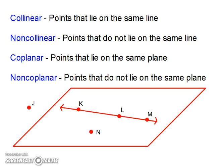Coplanar are points that lie on the same plane. So K, N, L are collinear. However, non-coplanar means that they do not lie on the same plane, so that would be like J, K, N because J is not on the plane.